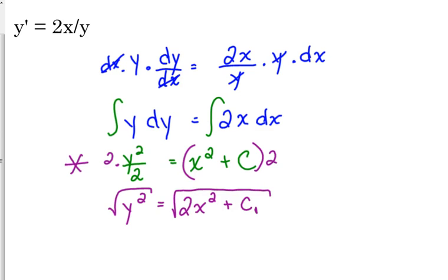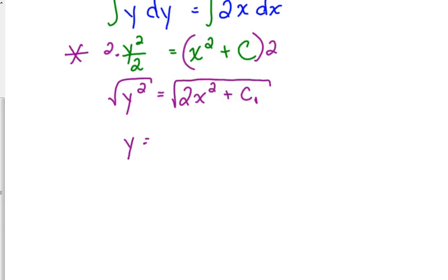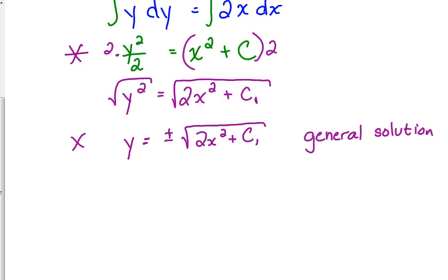And if we are trying to solve completely for y, we would take the square root. Don't forget when you take the square root to include the positive and the negative. So this would be another form of a general solution to this differential equation. So they may solve it completely for y, or they may leave it in the y squared over 2 form.